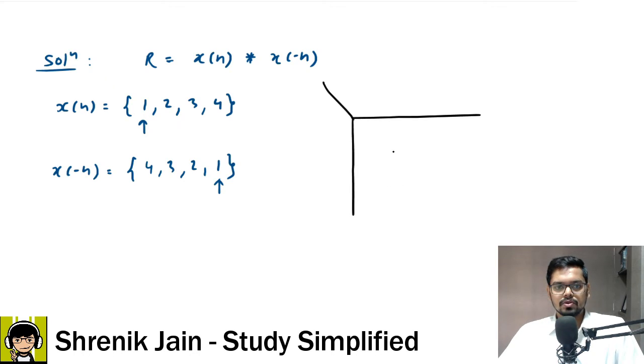So, 4, 3, 2, 1 and the arrow would be here, right? So, if I do now my autocorrelation using table, it would look like this, where X of N values I am writing here and X of minus N values I am writing here, okay? You can do vice versa also if you want. Answer remains same.